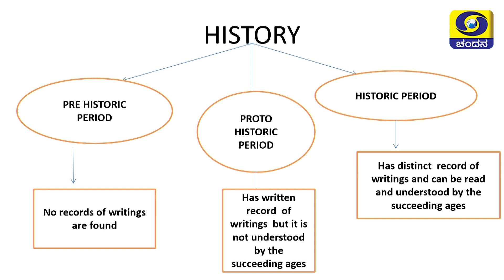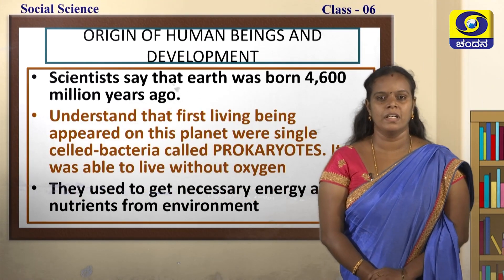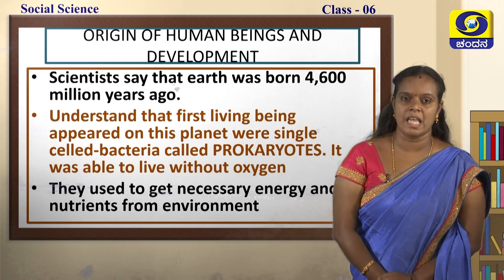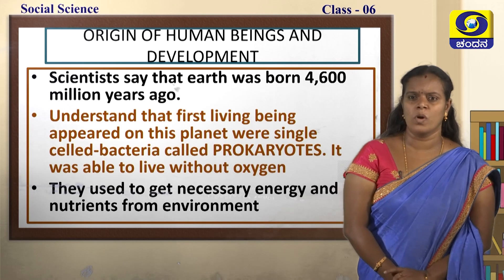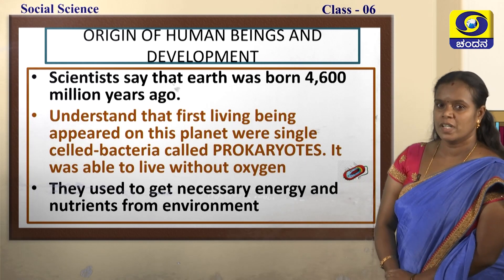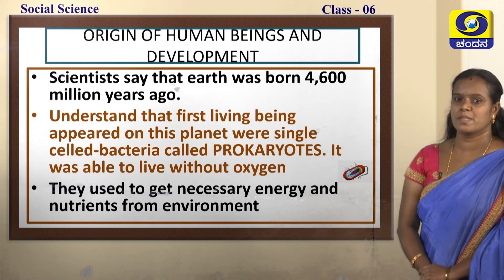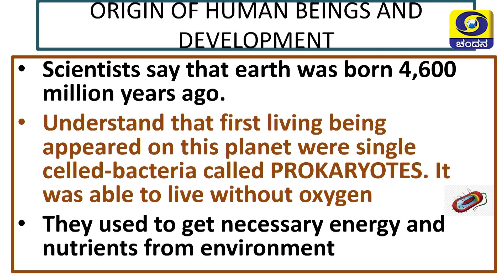Now let us move on to the origin of human beings and their development. Scientists say that the earth was born more than 4,600 million years ago. The first living beings that appeared on this planet were single-celled bacteria called prokaryotes. You can see the picture of prokaryotes on the screen. These prokaryotes were able to live without oxygen and used to get necessary energy and nutrients from the environment.